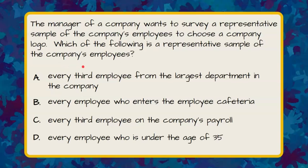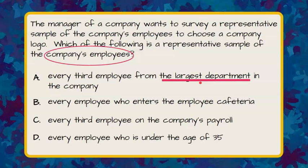We are talking about a company's employees. The first choice is every third employee from the largest department in the company. The largest department is just one part of the company, and this alludes to the fact that there are smaller departments. So this would be biased because we're talking about one department and not the entire company. We're going to say no to A.